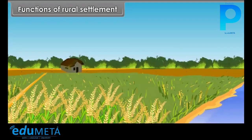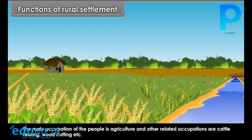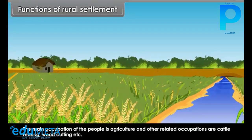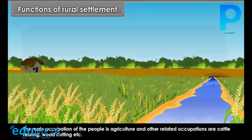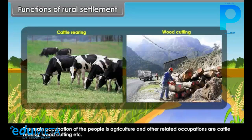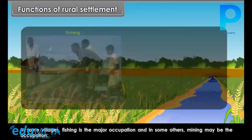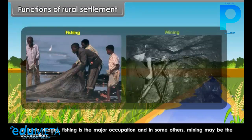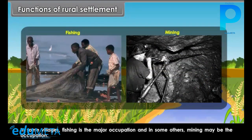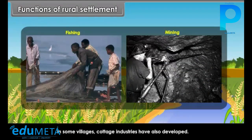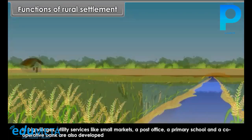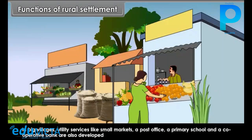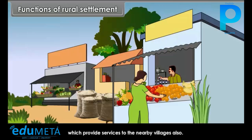Functions of Rural Settlement: The main occupation of the people is agriculture, and other related occupations are cattle rearing, wood cutting, etc. In some villages, fishing is the major occupation, and in some others, mining may be the occupation. In some villages, cottage industries have also developed. In big villages, utility services like small markets, a post office, a primary school, and a cooperative bank are also developed, which provide services to the nearby villages also.